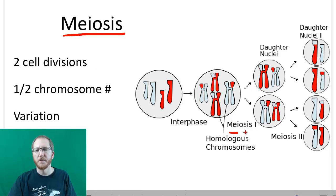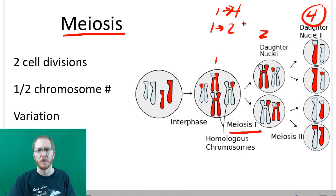Meiosis is going to involve two cell divisions. Meiosis I is going to involve going from one cell to two daughter cells, and then meiosis II will take those two daughter cells and ultimately give us four. So the result here is that we're going to go from one to four cells instead of in mitosis where we went from one to two cells.